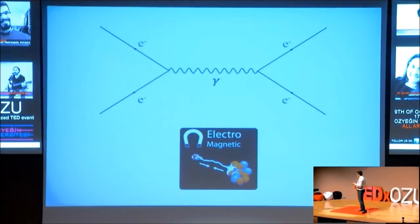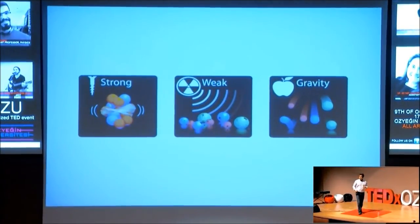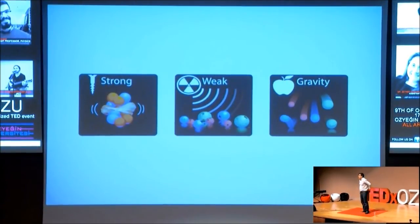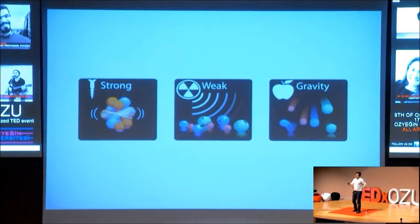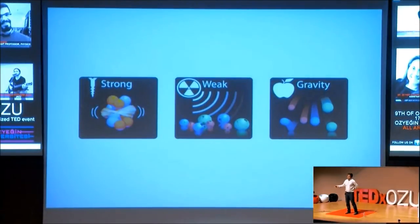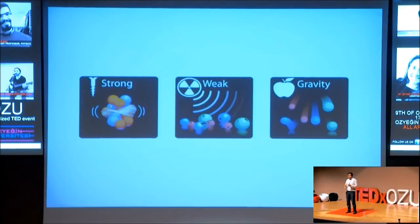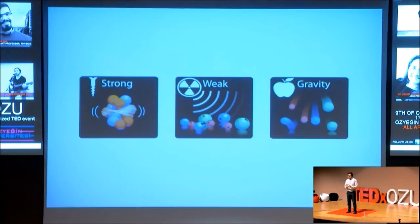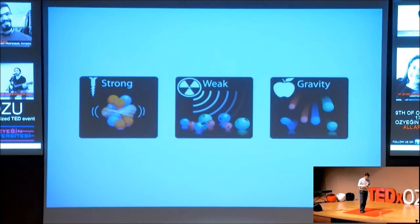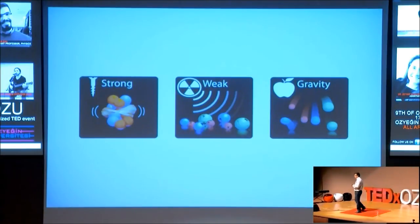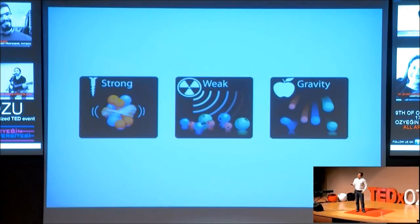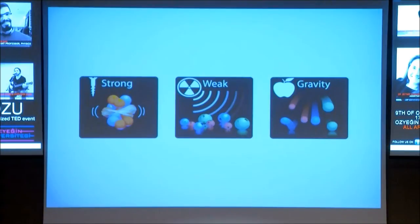Electromagnetism is one of the fundamental forces in the standard model. There are also other forces — for example, the strong force. Inside the nucleus, there are many protons which are positively charged. Have you ever asked how these positively charged particles can stay together in a very tiny place? They should repel each other. But there is another interaction between them — they can exchange particles called gluons, which glue quarks together and protons together inside the nucleus. The strong force is way stronger than the electromagnetic force. There is also the weak interaction — I prefer not to call it a force — which makes nuclear decays possible.